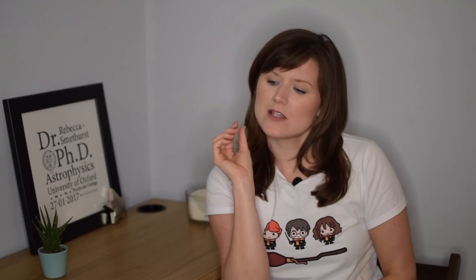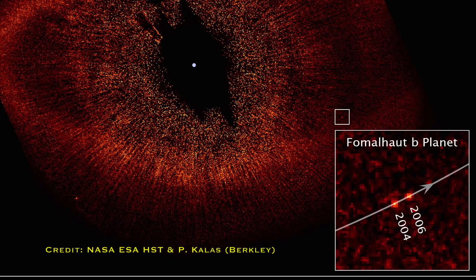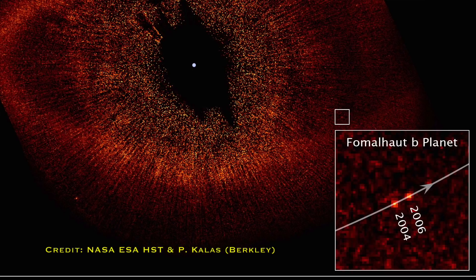To detect it, they needed the Hubble Space Telescope. They put a mask on the detector to block out all of the light from the central star. They took an image in 2004 and noticed that little bright spot there, maybe that's a planet. Took another image in 2006 and saw that that bright spot had moved on its orbit around the star Fomalhaut. This image is one of the most famous scientific images of the 21st century.